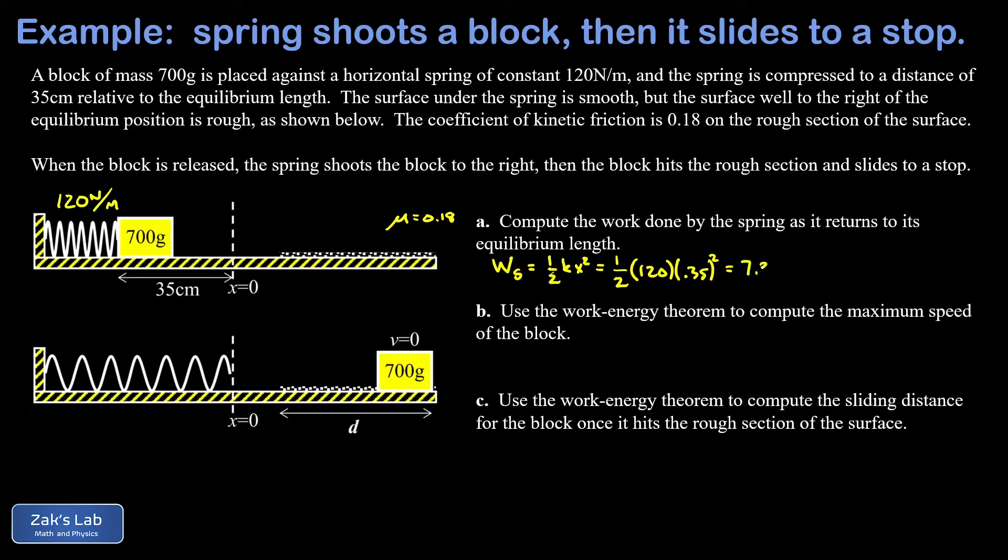Now in part B, we're asked to use the work-energy theorem to compute the maximum speed of the block. So remember, the work-energy theorem says that the net work done on an object results in a change in its kinetic energy, that'll call delta k.